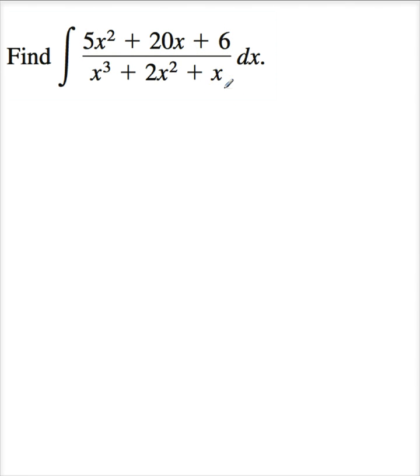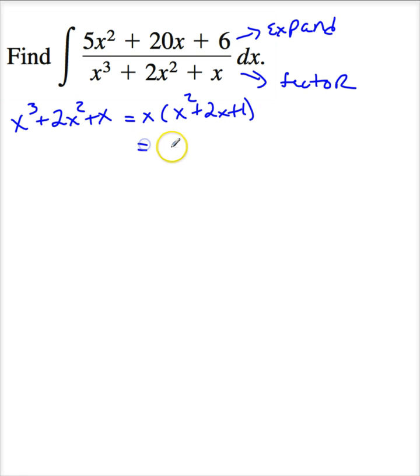Your first step is make sure you expand the numerator, and this one's already expanded, and then factor your denominator. So I'm going to rewrite x cubed plus 2x squared plus x. Obviously I can get an x out of each term. x squared plus 2x plus 1, and of course this factors into x times x plus 1 quantity squared. So I've expanded and I've factored.